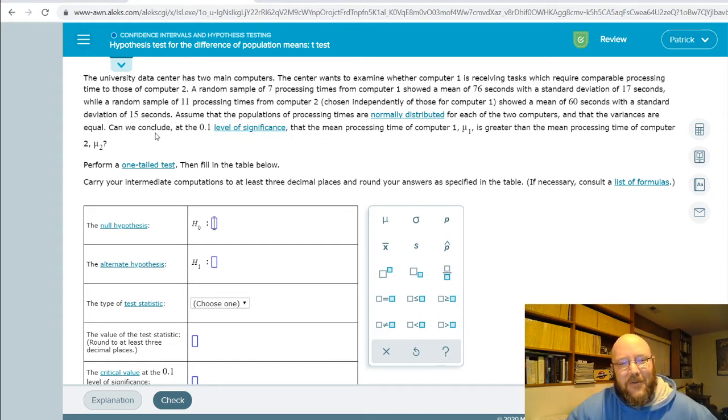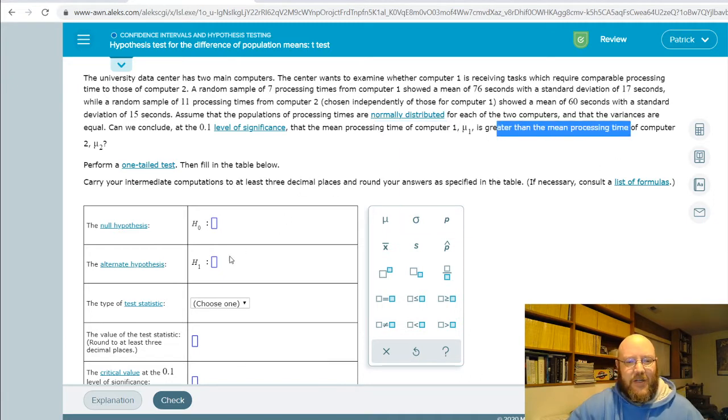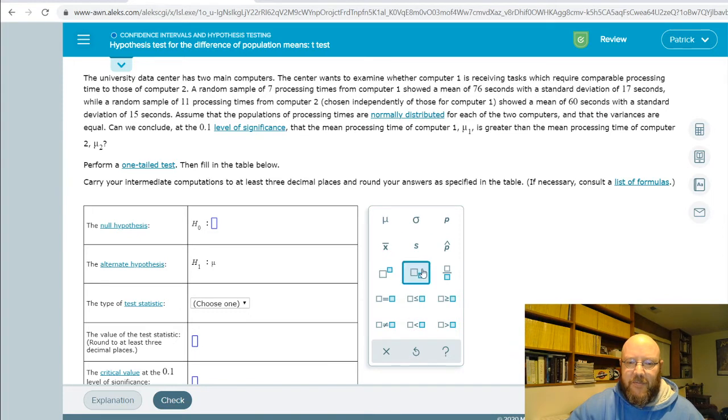But anyway, here we go, let's go through this. Can we conclude at the .01 level significance mean processing time of computer one greater than mean processing time of computer two? So finally, there's our claim. So we think that mean one minus mean two would be greater than zero. So grab all that stuff, copy that, paste it, and of course cover all your bases with your null hypothesis, so that would be everything else.